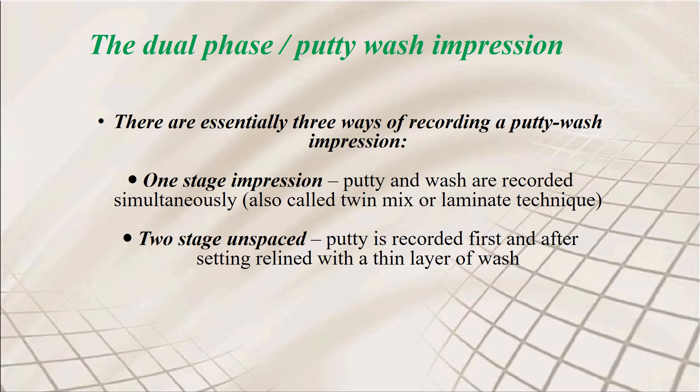In the one-stage technique you take the required amount of putty, spread it on the tray, layer the wash material (light body) on top, and press it against the impression surface. Two-stage unspaced technique: the putty record is taken first; after setting, it is relined with a thin layer of wash material. You press the putty against the teeth, remove it, then add a thin layer of light body and record again.